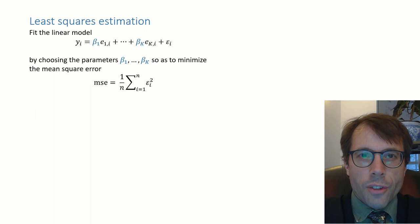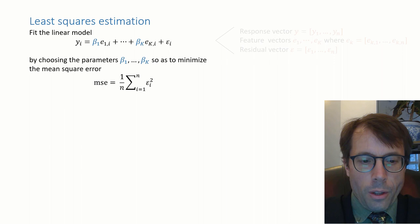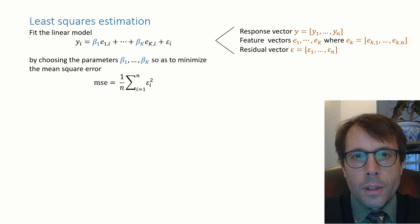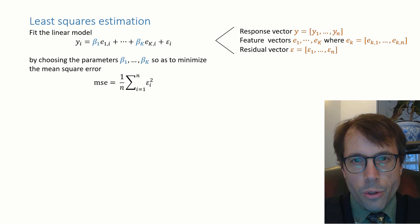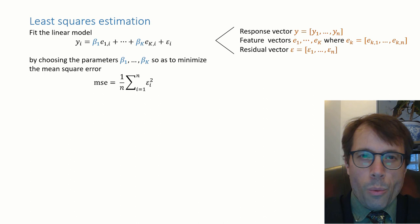Let's recap. Least squares estimation is for when we have a model like this: yi is beta1 e1i plus dot dot dot plus betak eki plus epsilon i, where yi is the response for record i, e1i up to eki are the features for record i, and epsilon i is the error or residual. Least squares estimation says that to estimate the parameters beta1 up to betak, we should choose them so as to minimize the mean of the squared error terms.